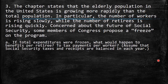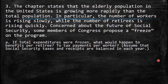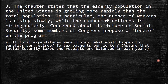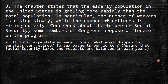The third question states that the elderly population in the United States is growing more rapidly than the total population — and this is not just a trend in the US but also in other parts of the world, such as Europe. The number of workers is rising slowly because the birth rate differs from the rate at which people are getting older, while the number of retirees is rising quickly. Concerned about the future of Social Security, some members of Congress propose a freeze on the program.